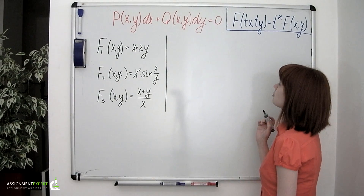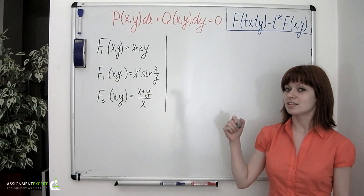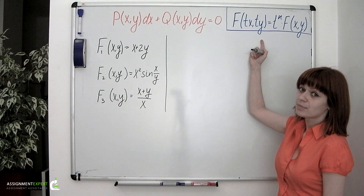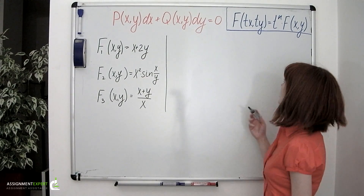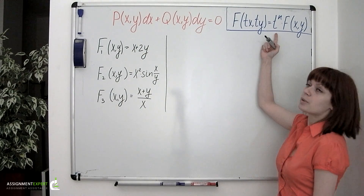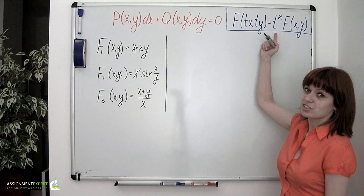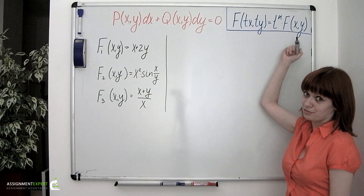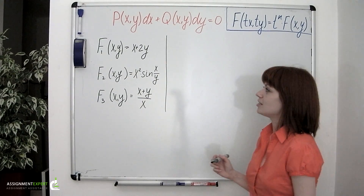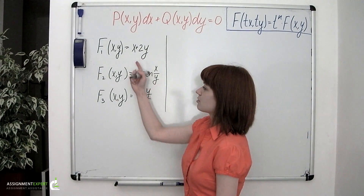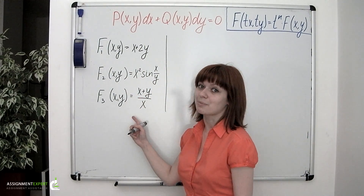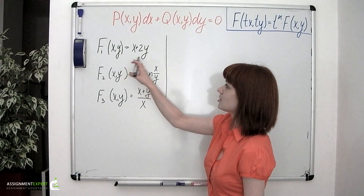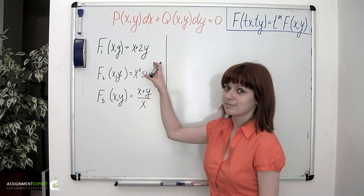It means that if we replace x and y in the initial function with tx and ty correspondingly, we'll obtain a new one in which t to the nth power can be factored out, and the other factor is the initial function itself. Now let's see if the three functions we have on the board are homogeneous or not. To do this, we need to substitute tx and ty instead of x and y.